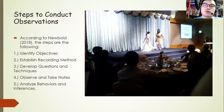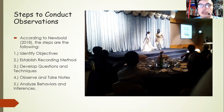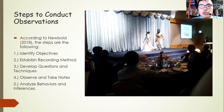Here are the steps to conduct observation. First, identify objectives — state the purpose of observing the participants. Second, establish the recording method by preparing materials. Third, develop questions and techniques. Fourth, observe and take notes — write what you have seen, how they behave, how they act. Finally, analyze the behavior and inferences, which is when you can interpret their actions.